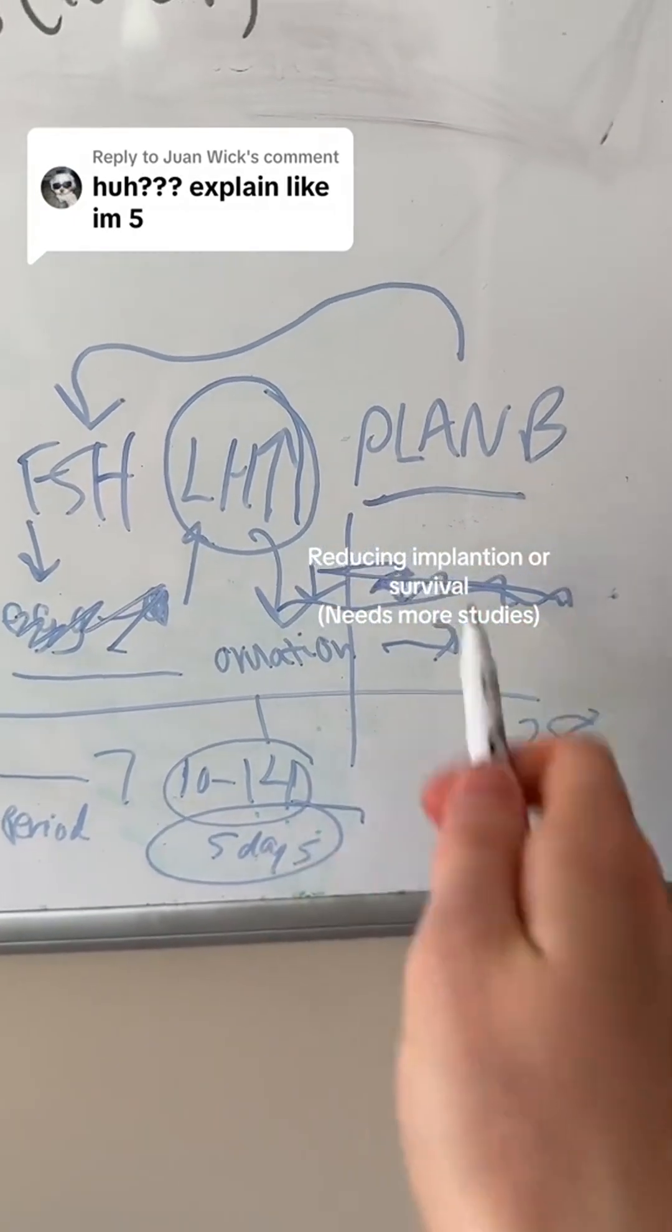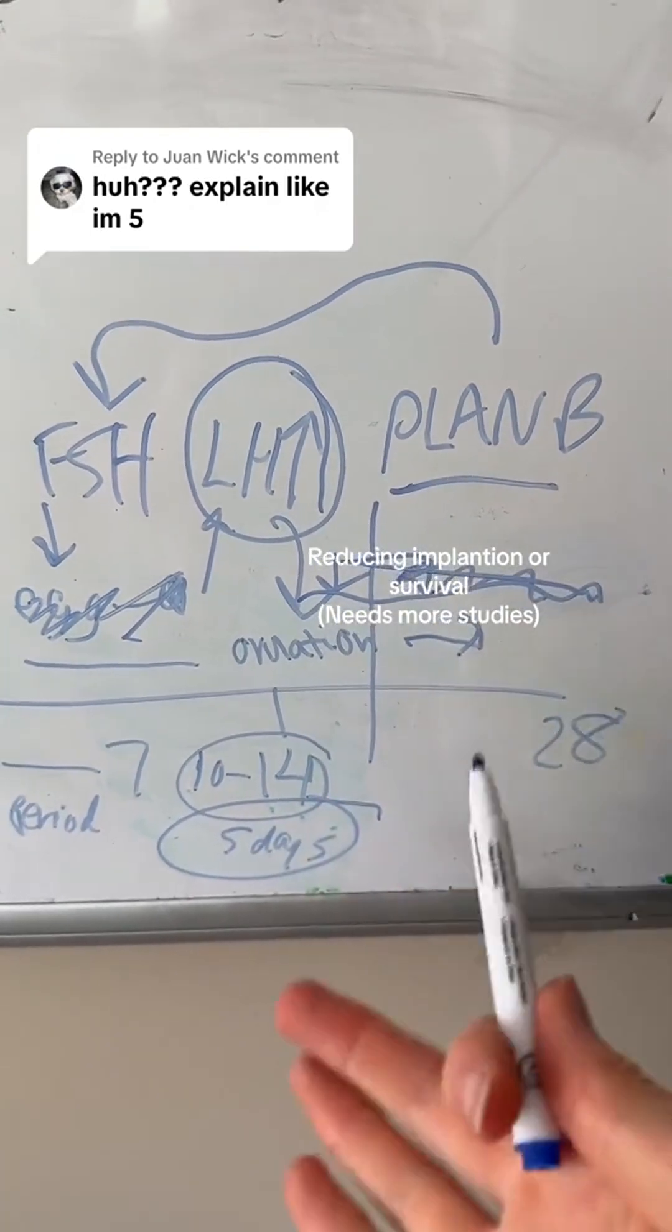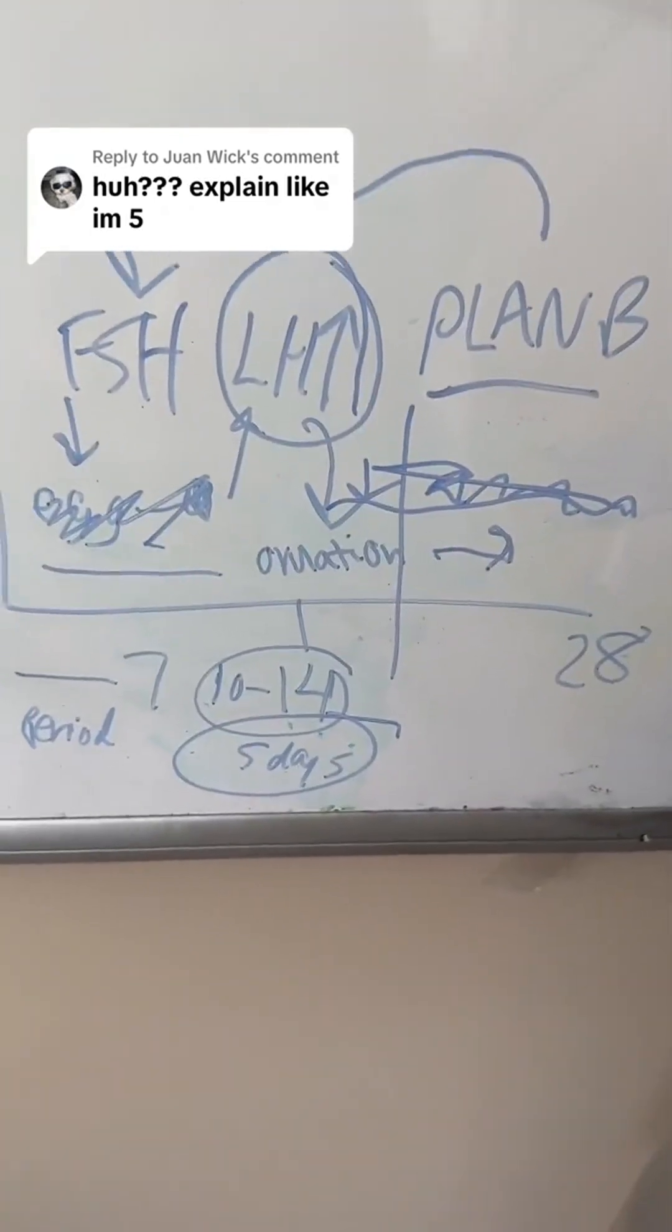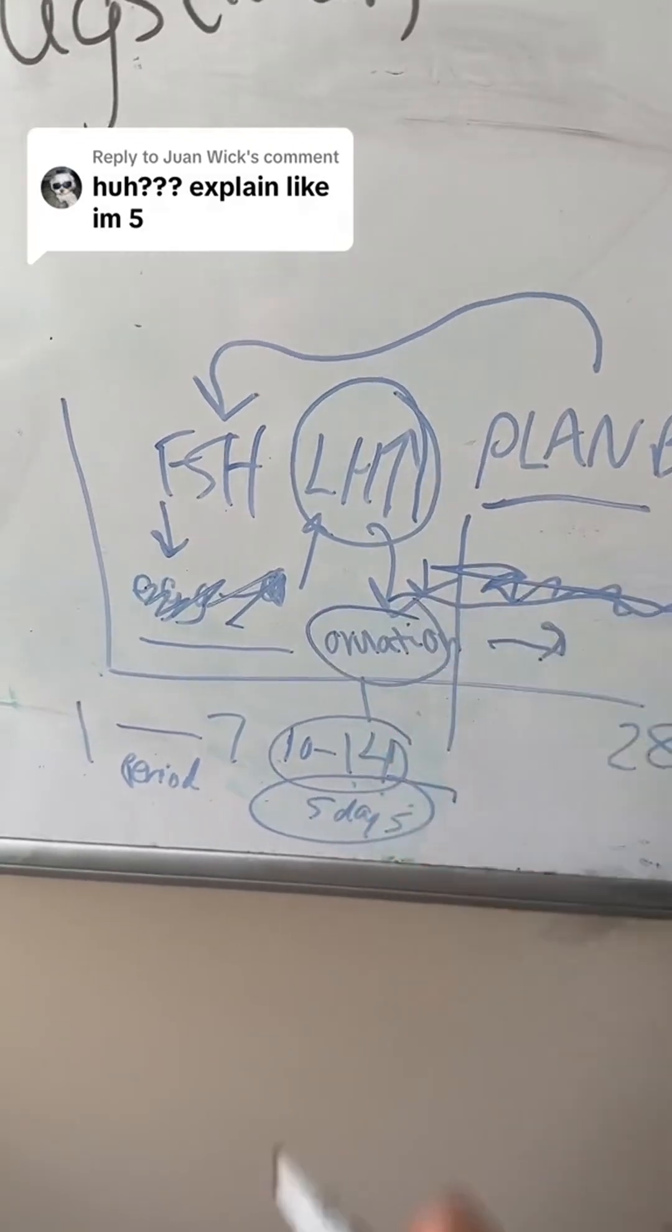And every time this happens and you have sex and then you have ovulation, you're not getting pregnant every single time. There's also that. But that is the main mechanism which plan B works - it halts ovulation.